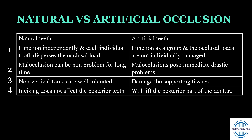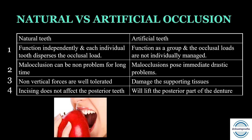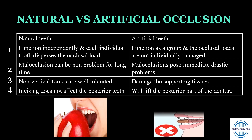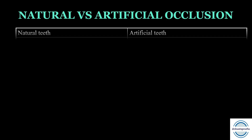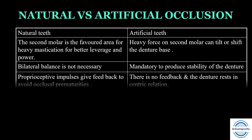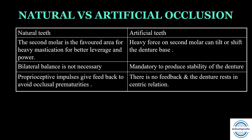Incising or biting with the anterior teeth does not affect the posterior teeth in the case of natural dentition, while if we try to bite or incise with the denture it may lift the posterior part of the denture. The second molar region in natural teeth acts as a favored area for heavy mastication for better leverage and power, while heavy force in the second molar area of a denture can tilt or shift the denture base.